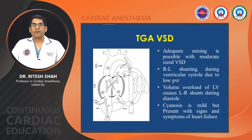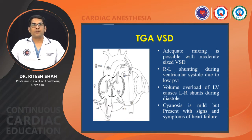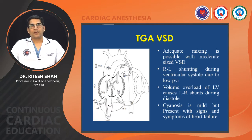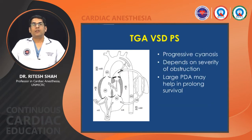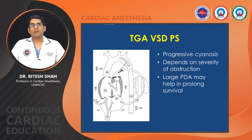In TGA with VSD, adequate mixing is possible with a moderate-sized VSD. Right-to-left shunting occurs during ventricular systole due to low pulmonary vascular resistance, and volume overload of the left ventricle causes left-to-right shunt during diastole. Heart failure is present but cyanosis is usually mild. These patients have higher chances of pulmonary vascular obstructive disease, possibly due to hypoxia and earlier development of collateral vessels. In TGA with VSD and pulmonary stenosis, there is progressive cyanosis; large PDA may help in prolonged survival, and these patients may survive up to teenage without significant difficulty.